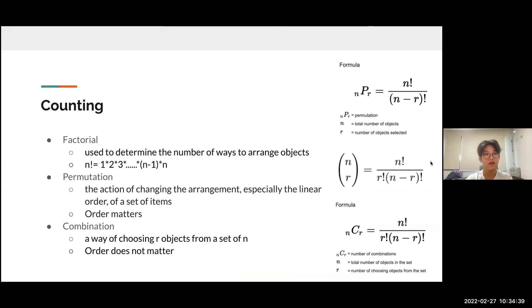First is counting. There are three main useful tools for counting. The first one is factorial. Factorial is used to determine the number of ways to arrange objects. For writing it, you use an exclamation point. This sign means you're multiplying all the numbers from one to n. So if you're doing seven factorial, you're multiplying all the numbers from one to seven: one times two times three, and so on.